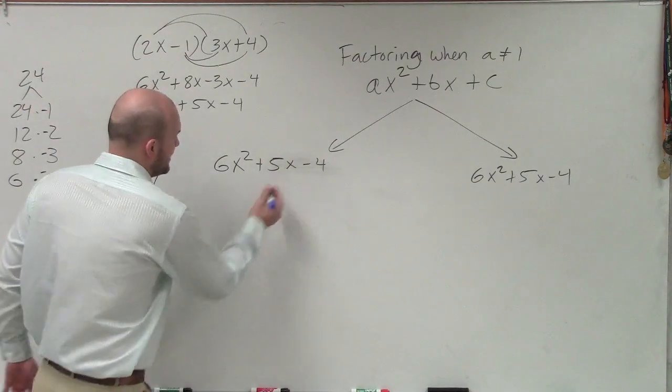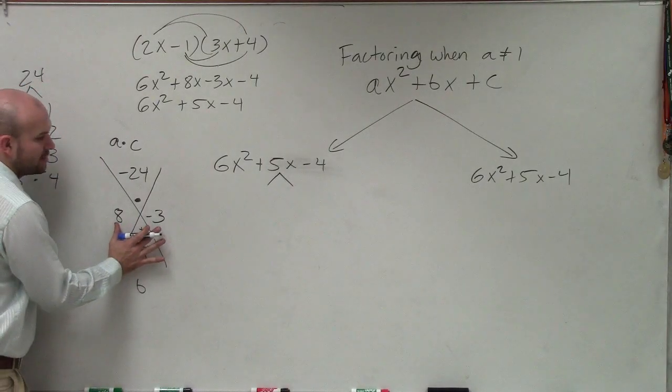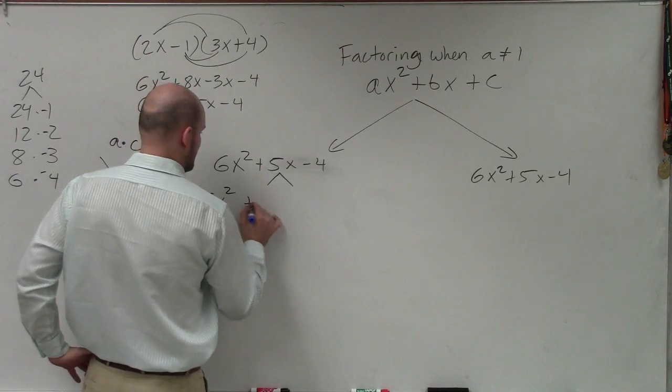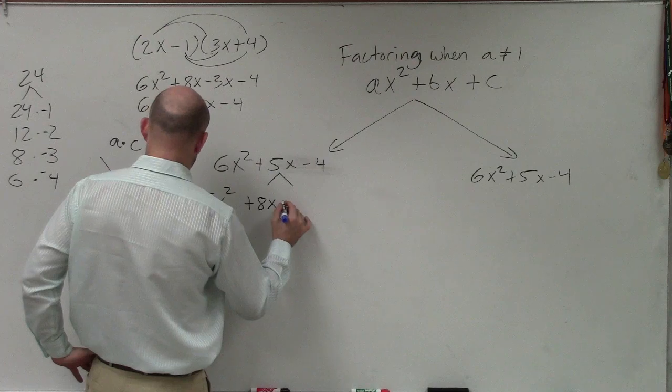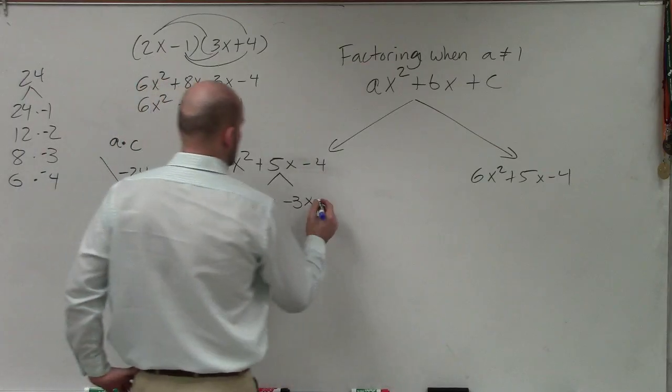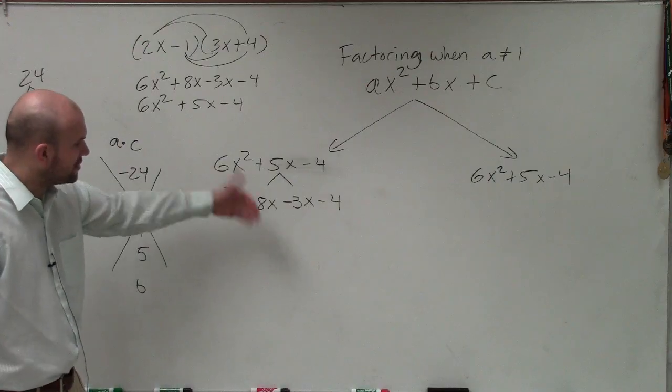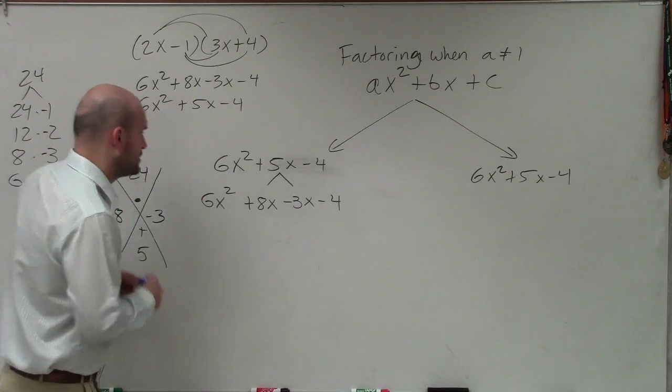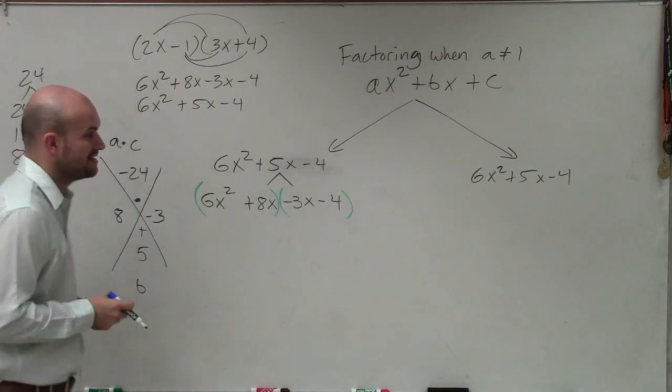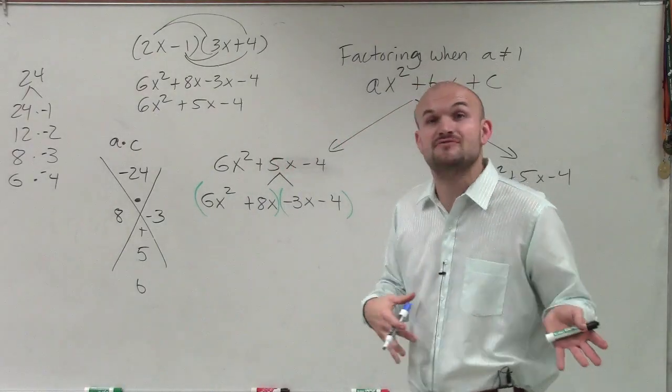So now what I do is I take my middle term of my original quadratic, and I break it up with coefficients of 8 and negative 3. So now I rewrite this as 6x squared plus 8x minus 3x minus 4. So now I've broken this up. And now I do what we call a technique, which we call factor by grouping. So what I'm going to do is I'm going to group the first two terms and group the last two terms. And now what I do is I look at each one of those expressions and see what can I factor out as far as a GCF.